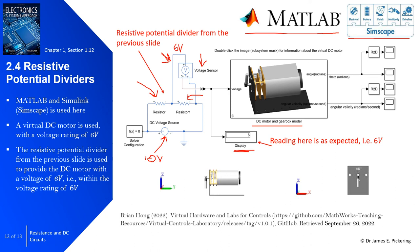Running the simulation, the DC motor spins for 5 seconds, supplied with 6 volts. The display reads 6 volts as expected, confirming that the resistive potential divider has been configured correctly to create the voltage drop between the two resistors and provide the DC motor with the desired voltage.